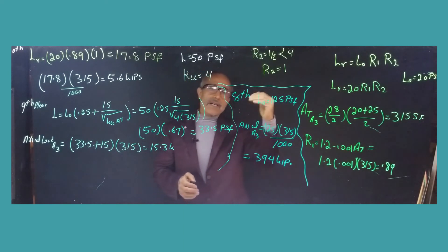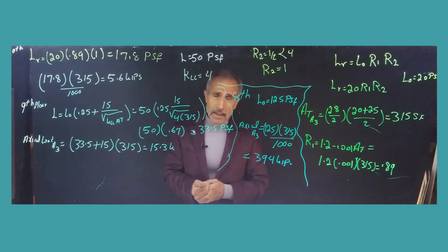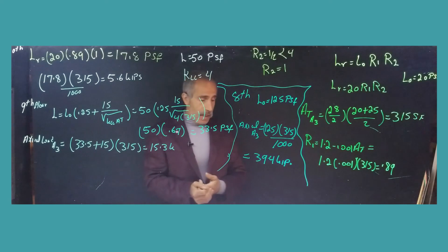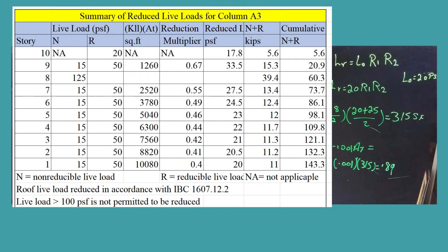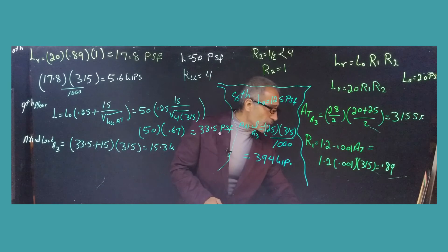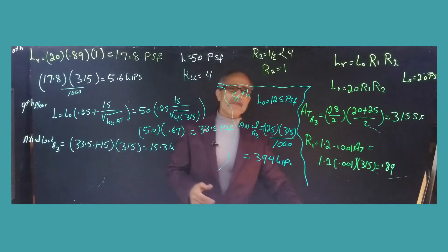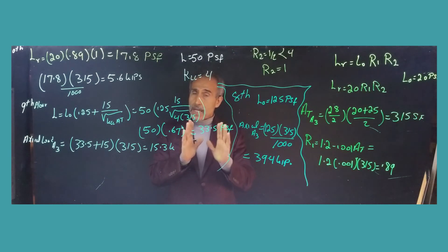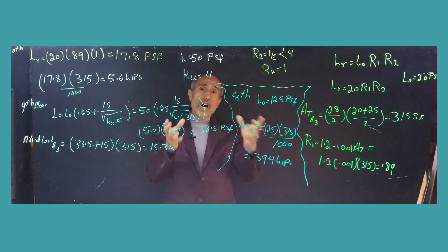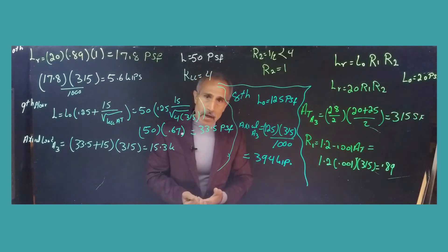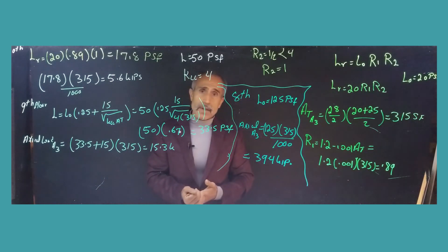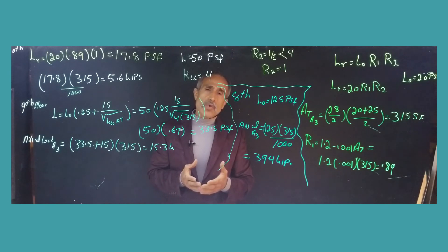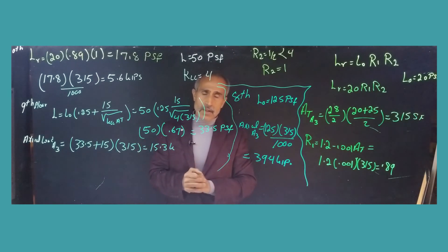Go ahead and fill out the rest of the spreadsheet — it's good practice, and if you can't figure out any number, email me and I'll work with you. When you get all the way to the bottom floor, the total accumulated live load on the column is 143.3 kips — that's the combined live load from all floors. In real life, you'd then also calculate dead load from top to bottom, add rain load, snow load, and potentially earthquake or wind load for that area, then apply load combinations to get the final design load.